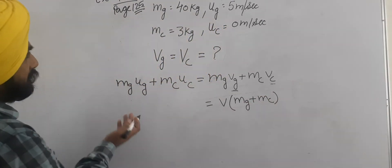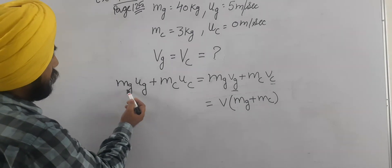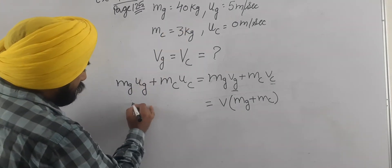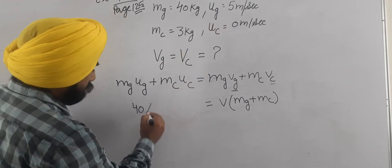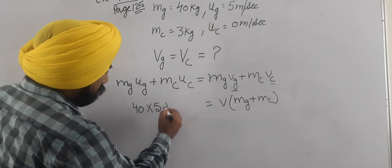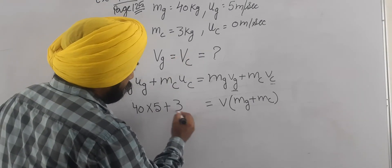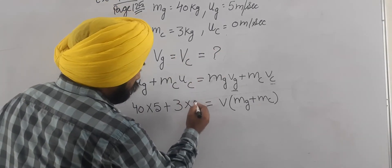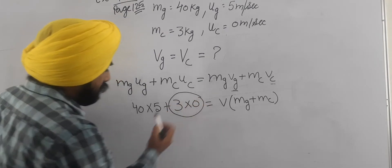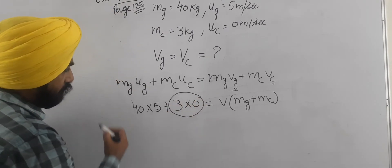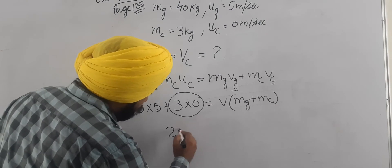And here putting values, because we have the values here. Mg that is 40 kg, and ug that is 5, plus mc is 3 and uc is 0. So if we multiply by 0, this entire value will become 0. And the remaining is 5 times 4 is 20, so 200 will be here.